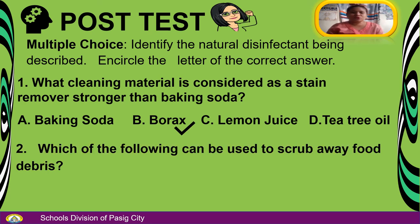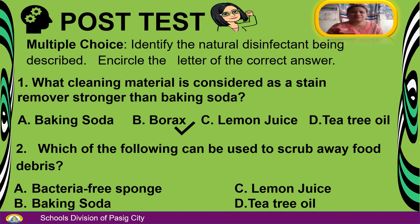Number 2: Which of the following can be used to scrub away food debris? A. Bacteria-free sponge. B. Baking soda. C. Lemon juice. D. Tea tree oil. The answer is A — Bacteria-free sponge.